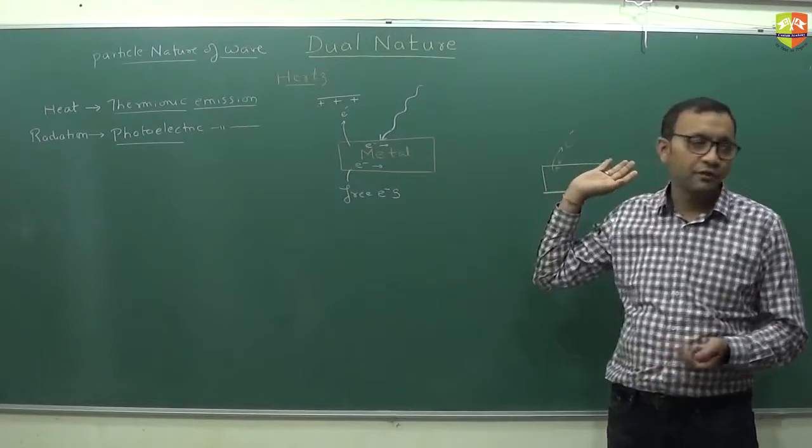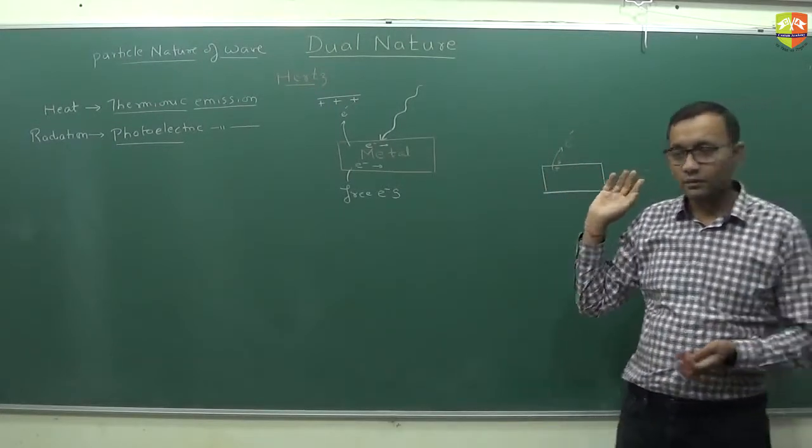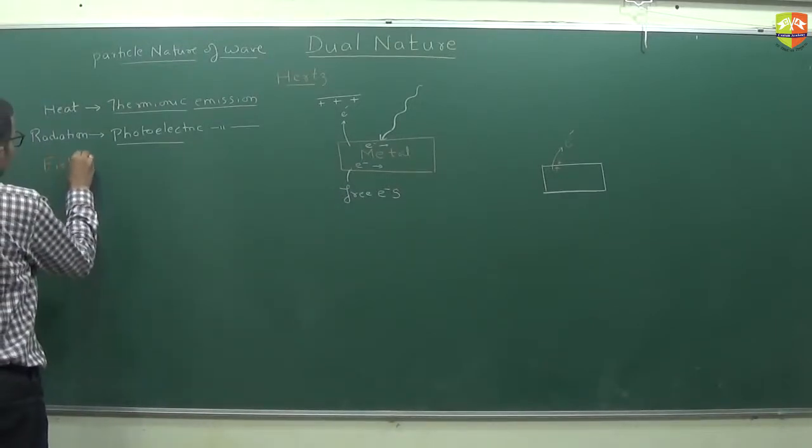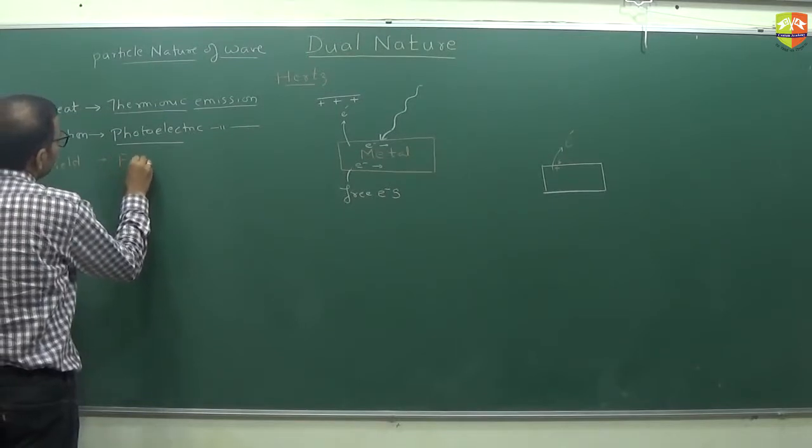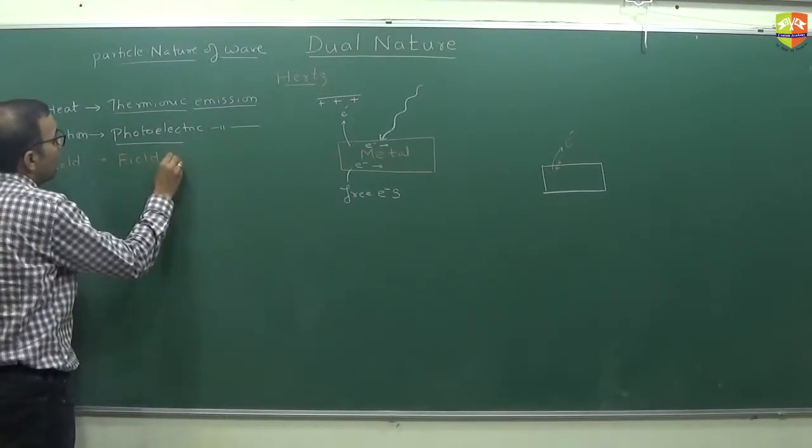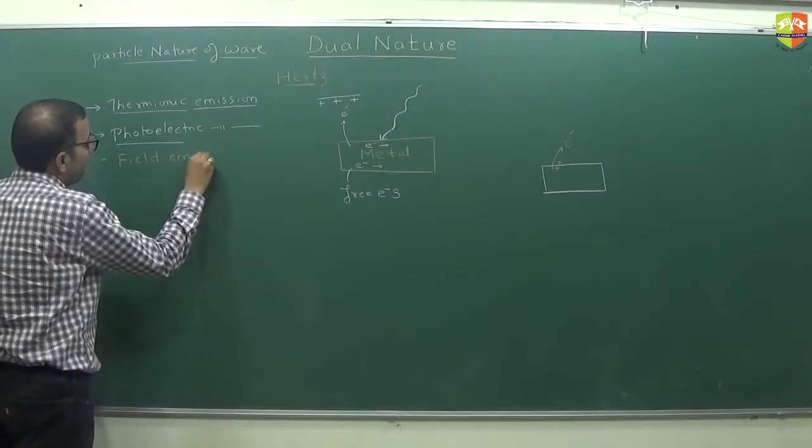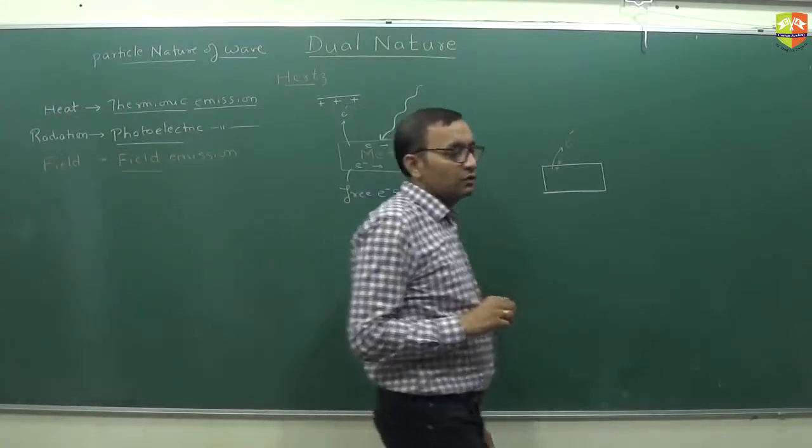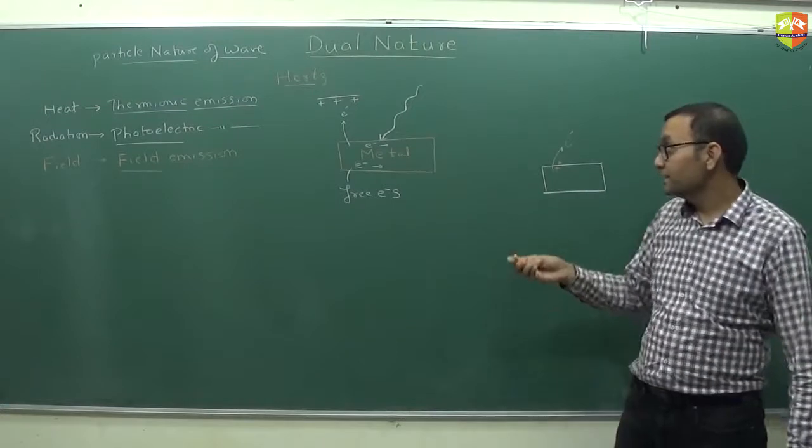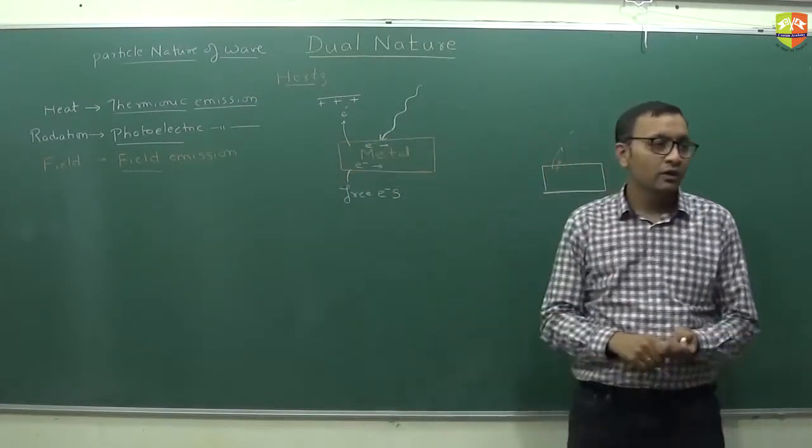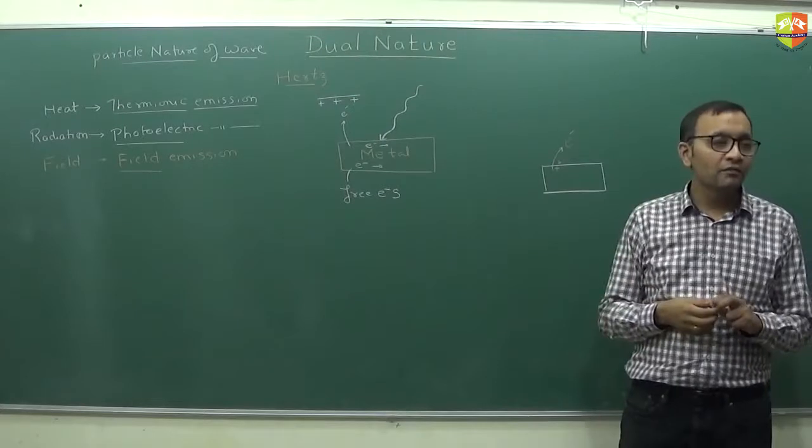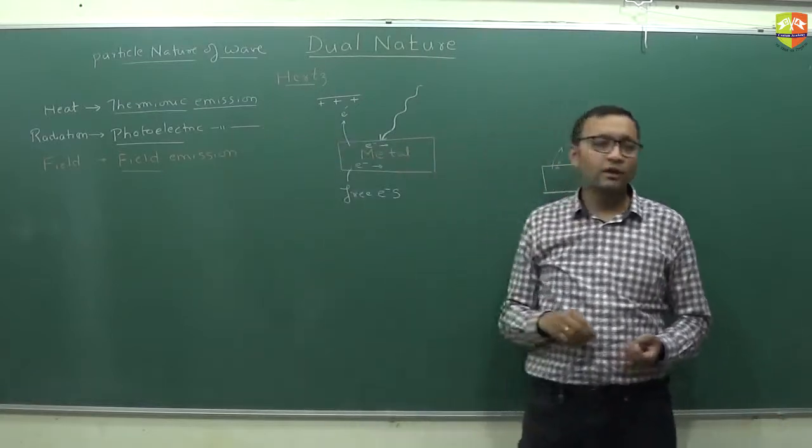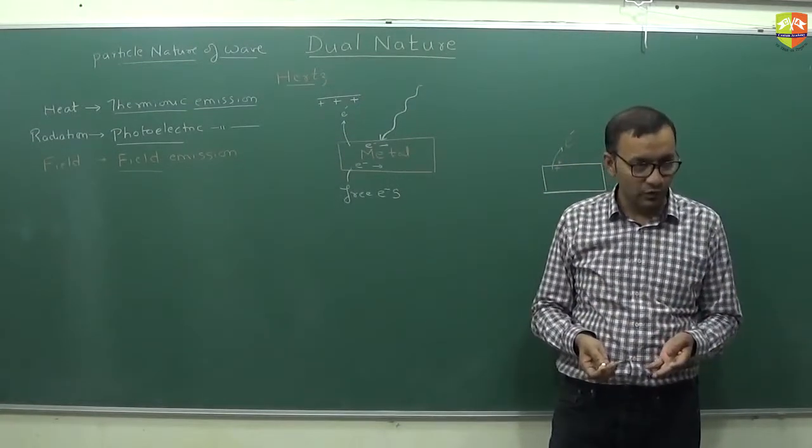You can create a huge electric field. So if it is due to the electric field, we call it field emission. These are the three kinds of emission. Once Hertz had discovered that electron can come out, then they started finding the ways in which electron can come out. So roughly three ways you can give the energy to the electron and electron will come out.